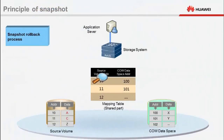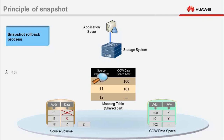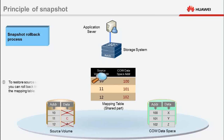The snapshot feature not only quickly creates a point-in-time copy of a source volume, but also provides a mechanism for restoring source volume data. If data on a source volume is infected by a virus, mistakenly deleted, or becomes damaged in some other way, you can instantaneously roll back the source volume to the point in time when the snapshot was activated, thereby minimizing data loss. If data stored at address 10 is mistakenly deleted, overwritten, or infected with a virus, the COW data space retains the data at snapshot points in time, even though the source volume data is overwritten. If the data at address 12 becomes damaged, the storage system considers the event as a change to data Z at address 12, and copies data Z to the COW data space. To restore the source volume data to a point in time, you can roll back the snapshot.